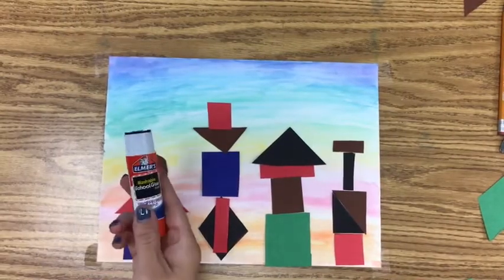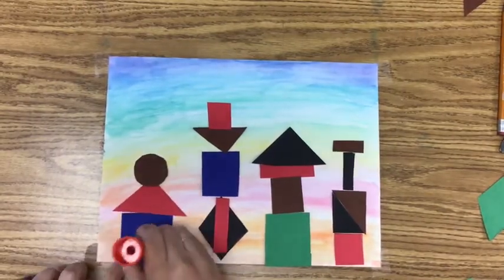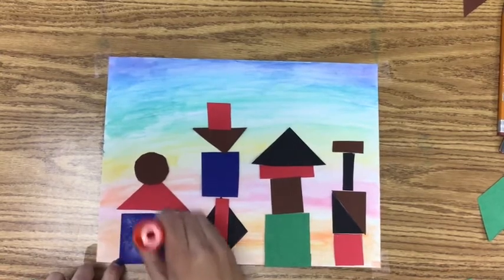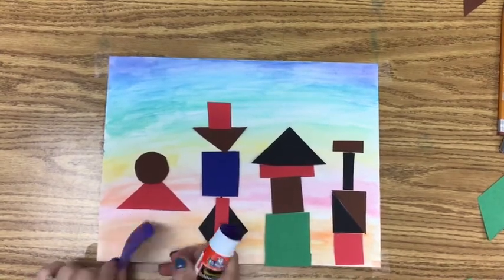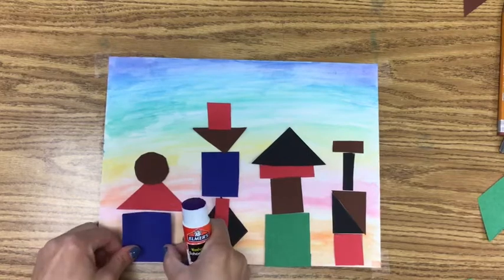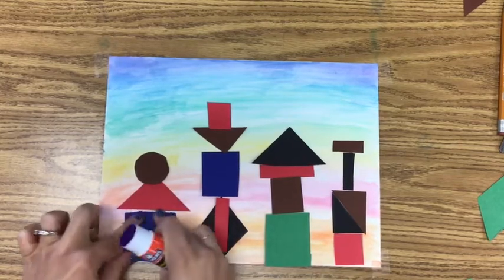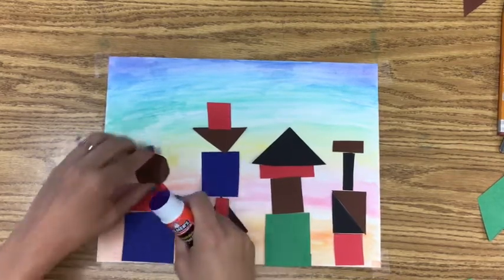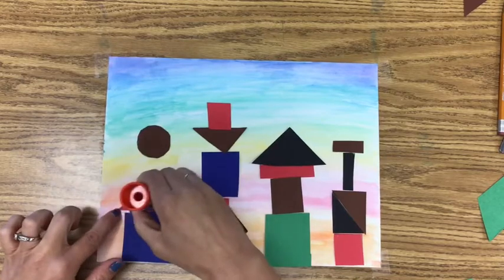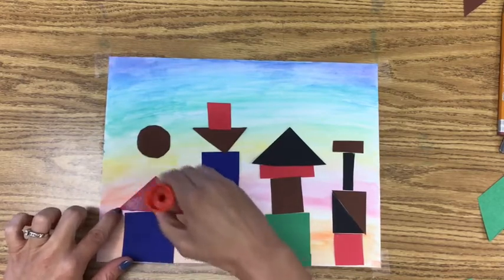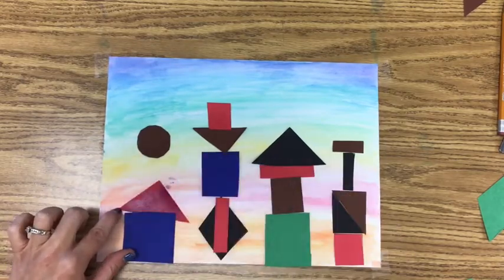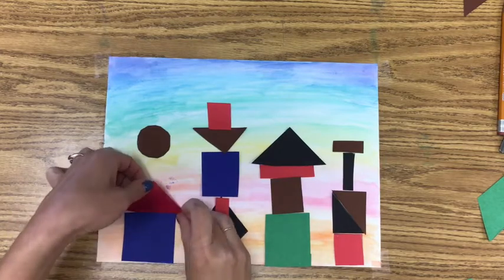Once you find a design that you like, you're going to glue it down onto your background. Notice how I put the glue stick all over one side, then flip it over and press it down. Do this with each piece. Make sure you get glue around the outside edges, then flip it over and press down each piece.